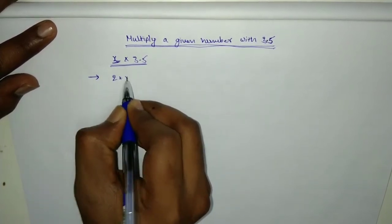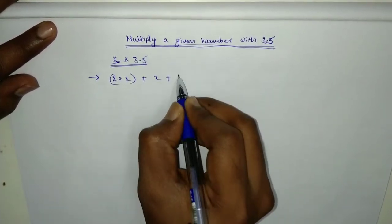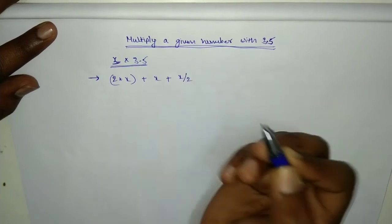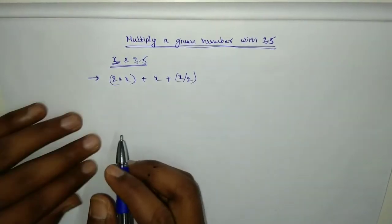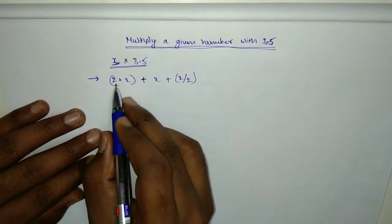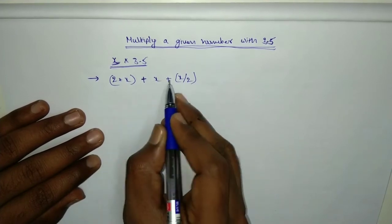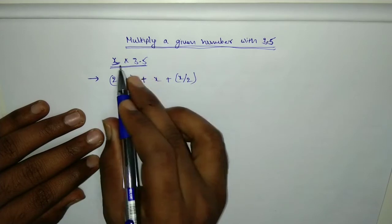2 times x plus x plus x by 2. So if you add 2x plus x plus x by 2, that is 3.5x.